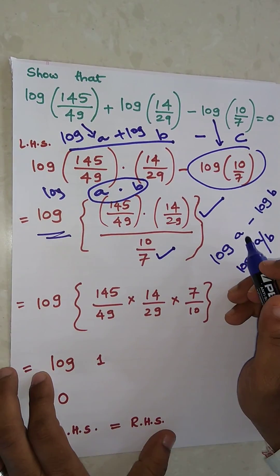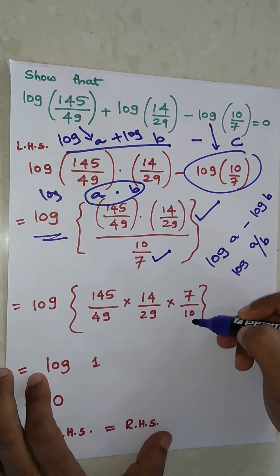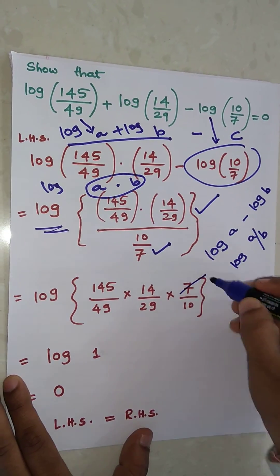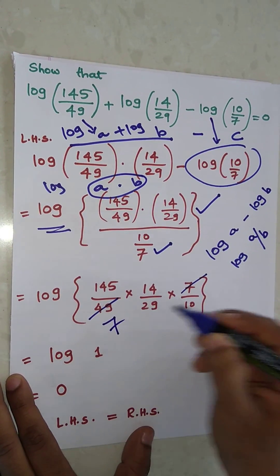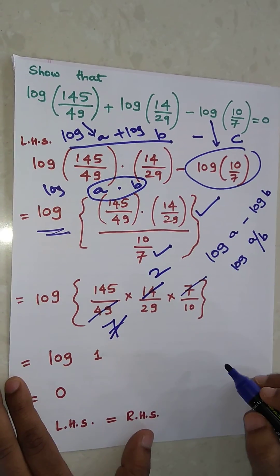So now in this case, denominator is 10 upon 7. If you multiply, it will be 7 upon 10. So now, first thing is that 7 into 7, this is 49. Then 7 into 2 is nothing but 14.